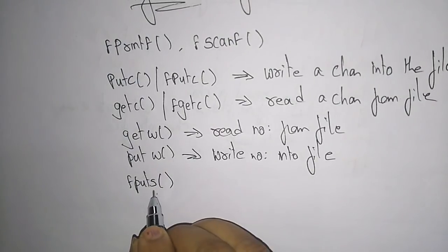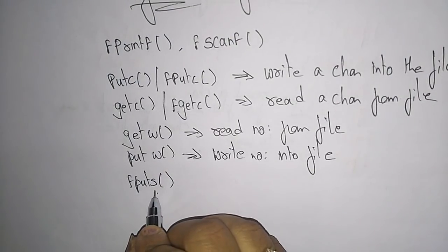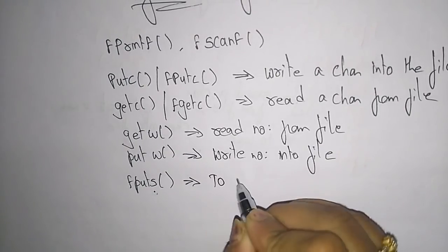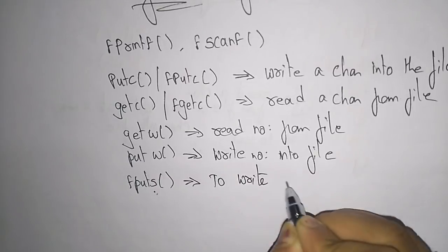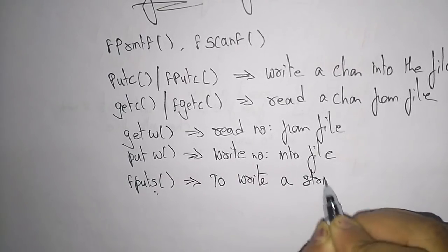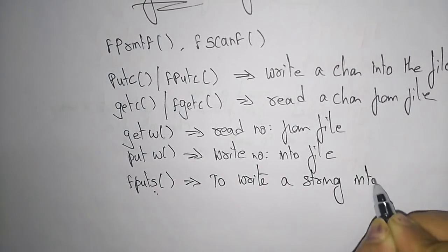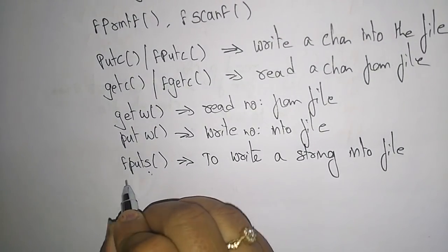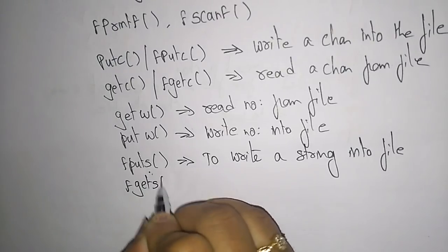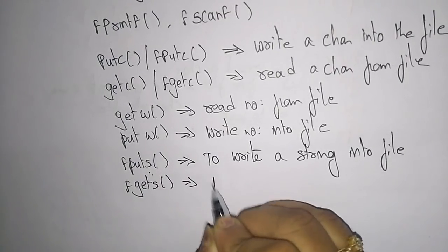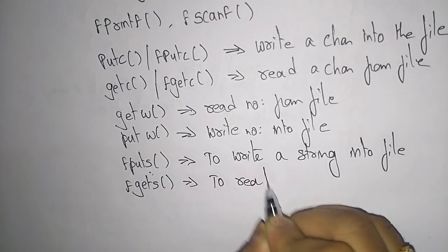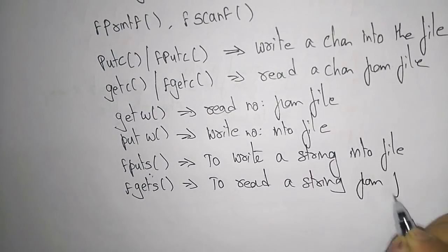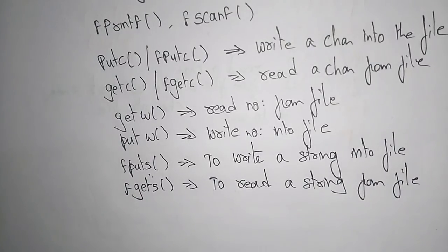Next, fputs — the 's' indicates operations on strings. The fputs function is used to write a string into a file. And fgets is used to read a string from a file.